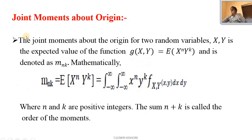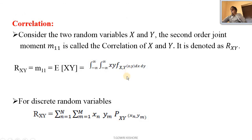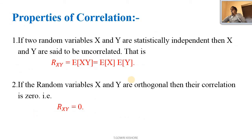In this session we have studied about the joint moment about the origin, mathematically represented as m n k, where n plus k represents the order of the moment. We studied the first and second order moments, and in the second order moment m₁₁ represents the correlation. We also studied correlation and its properties. Thank you.